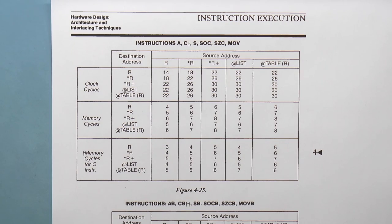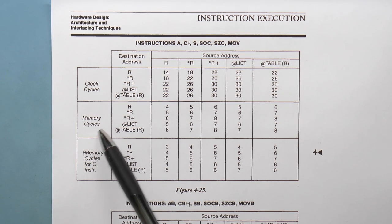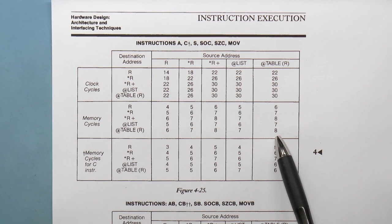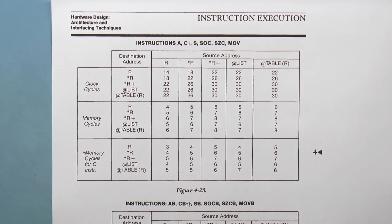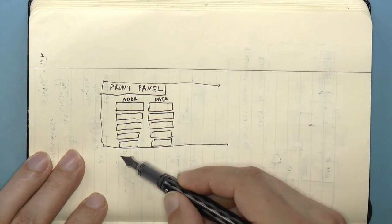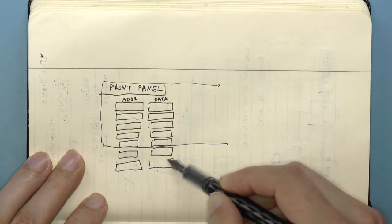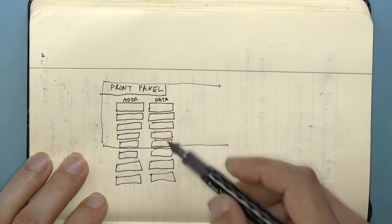However, according to this table, including the opcode fetch, there is a maximum of 8 memory accesses per instruction, so I'd need 16 of these 4-digit hex displays. I'm crazy, but this would be a really crazy front panel.